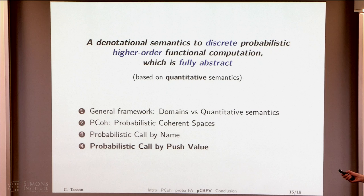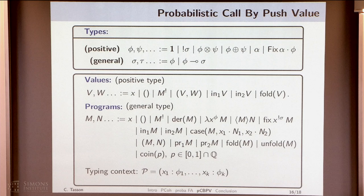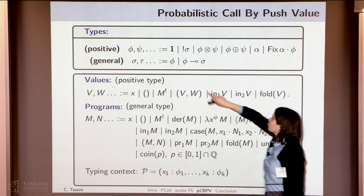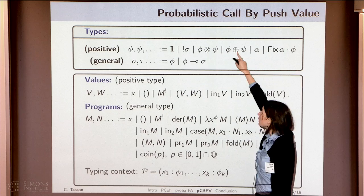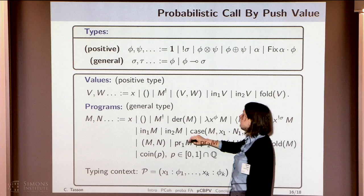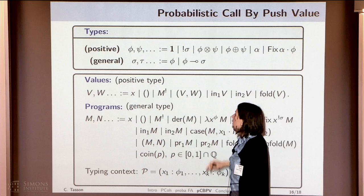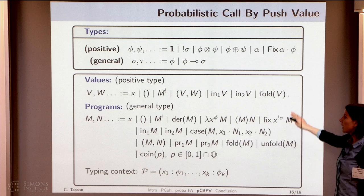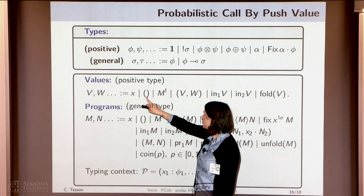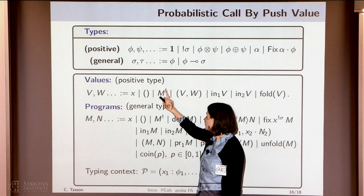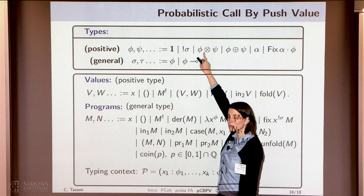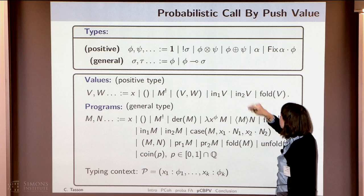We finally get probabilistic call-by-push-value, introduced 20 years ago by Paul Levy. The idea is we have two different kinds of types: positive types — bang sigma, tensor of two positive types, co-product, and fixed points — and general types, which can be positive or a linear application of a positive type on the left and a general type on the right. We also have two kinds of terms: values and general programs. For values, we have the unit term, the thunk of a program, pairs, constructions for co-product and for the fixed point of types.